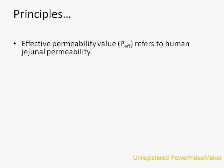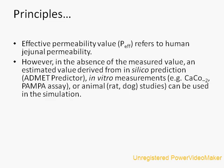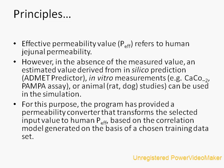The effective permeability value refers to human jejunal permeability. However, in the absence of a measured value, an estimated value derived from in silico prediction tools like ADMET Predictor or in vitro measurements using Caco-2 or PAMPA assays — or animal (rat or dog) studies — can be used in the simulation. For this purpose, a converter is needed to convert this in vitro data into effective permeability data relevant for humans.